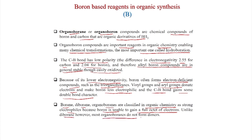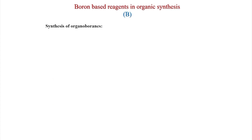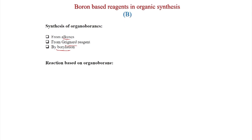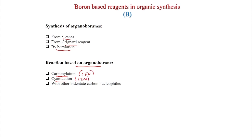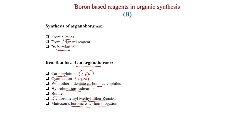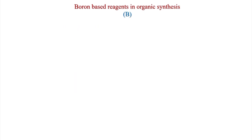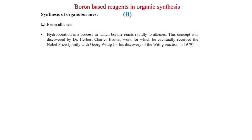Unlike diborane, most organoborons do not form dimers. In this talk we will first discuss synthesis of organoborons from alkenes, then from Grignard reagents and borylation, also transition metal-catalyzed borylation. We will also discuss reactions based on organoboron: carbonylation, cyanidation with cyanide, reactions with other bidentate carbon nucleophiles, hydroboration, iodination, borates, dichloromethyl methyl ether reactions, Matteson boronic ester homologation useful for allylic boronic esters, and allyl boration.